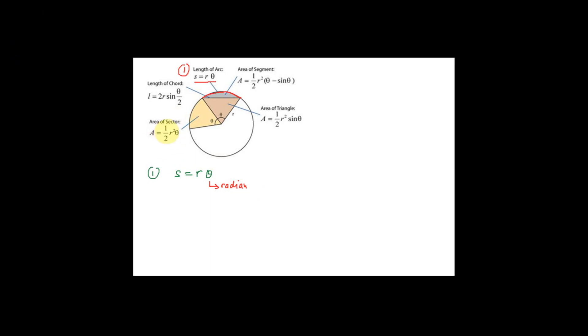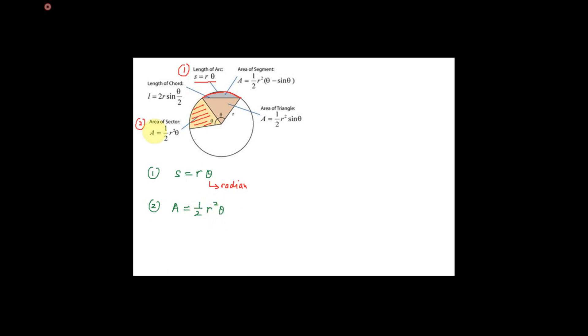The second formula is area of a sector. This is the area of the sector. Area of the sector is given by A equal to half R square theta. R is the radius, and again your theta must be in radians.